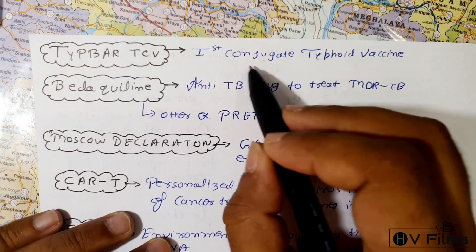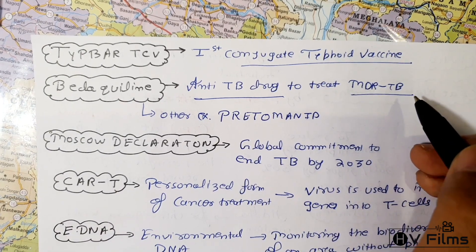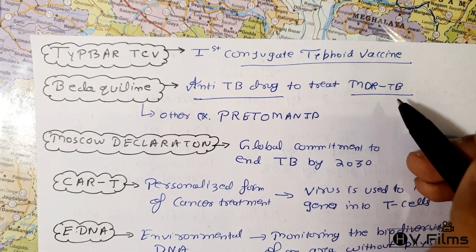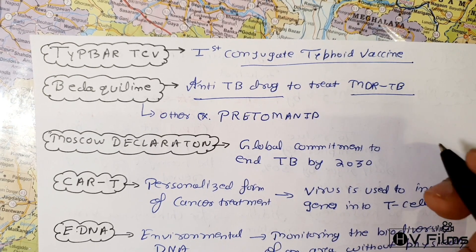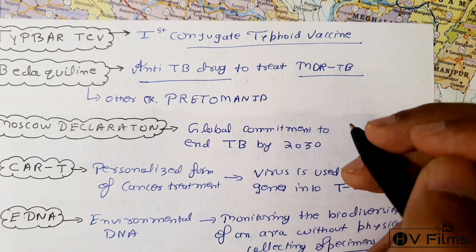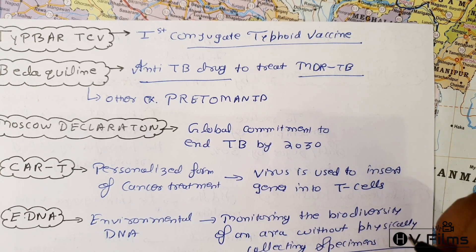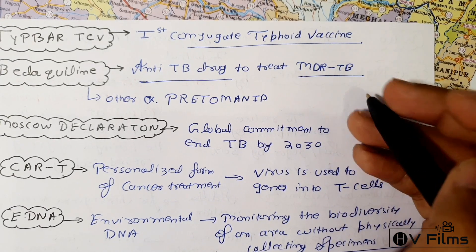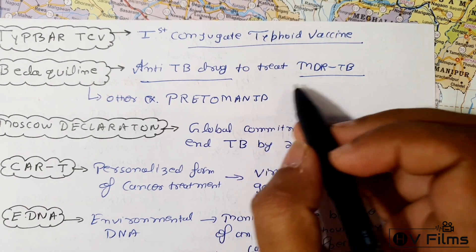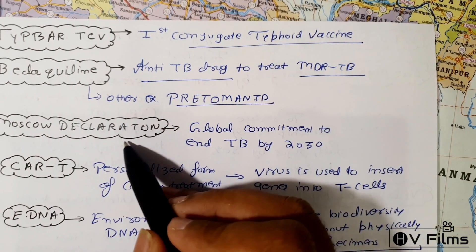TCV (typhoid conjugate vaccine) is the first conjugate typhoid vaccine. Bedaquiline is an anti-TB drug used to treat MDR-TB — multi-drug resistant tuberculosis. MDR-TB occurs when tuberculosis is left untreated for a long time and develops resistance to antibiotics. Pretomanid is another such drug. The Moscow Declaration is a global commitment to end TB by 2030, and India is also a part of it.